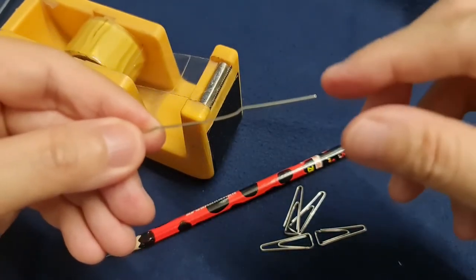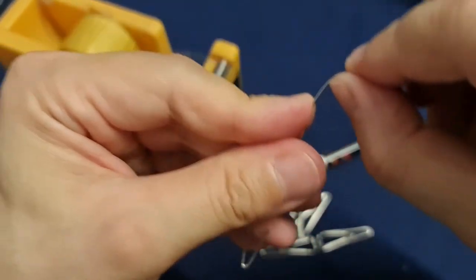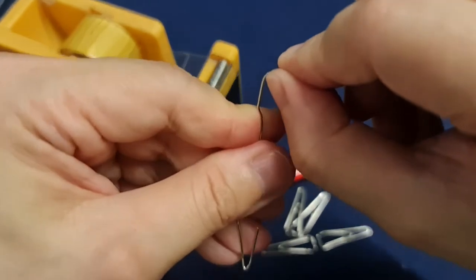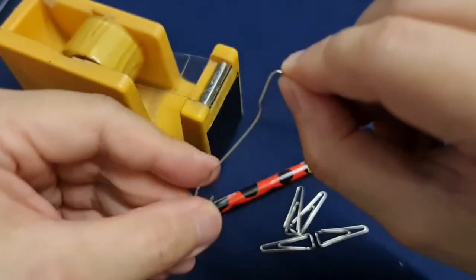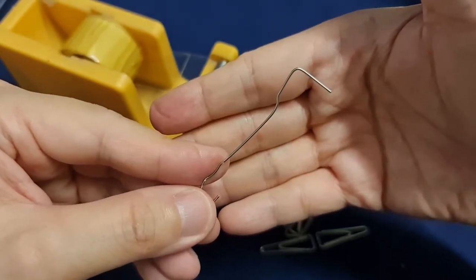And now what you're going to do is bend the top part of the paper clip. And voila, you've got your wick dipper.